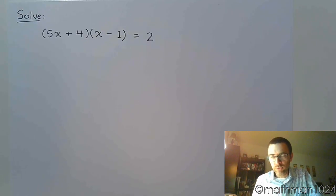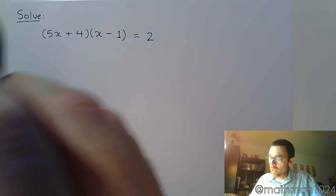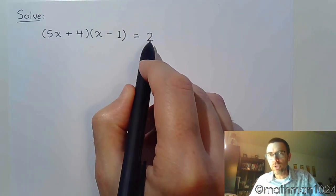All right, here is our last example for solving a quadratic equation using the zero factor theorem. Now, I put emphasis on the word zero because right now you do have some things that are factored, but the product is equal to two.